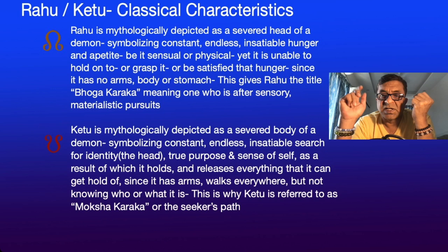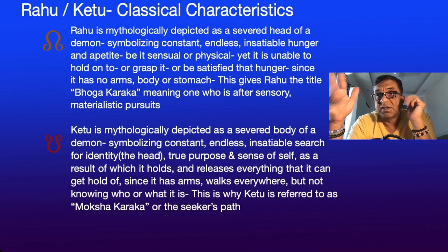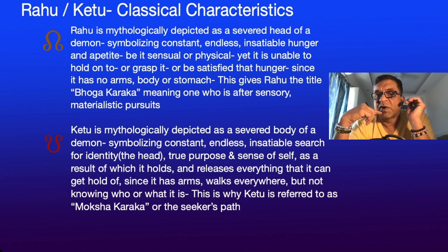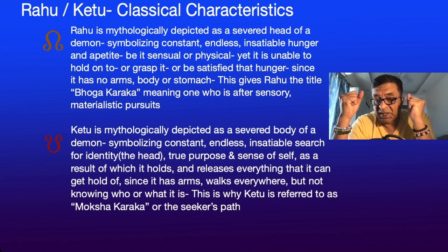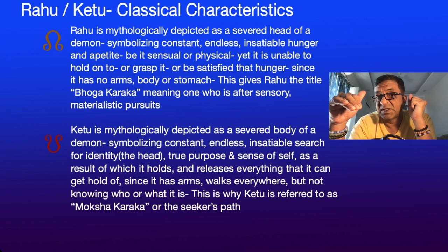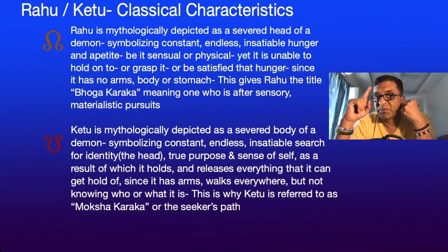Rahu wants any sign's materialistic pursuits and goes after them with everything. This is an energy in us — it is not a planet, it's a virtual node, but it behaves like one. It is unable to satisfy that hunger, and wants to move on to the next thing and then the next. This is why Rahu is also called the one who wants foreign things — not of the native land — because of that insatiable hunger.